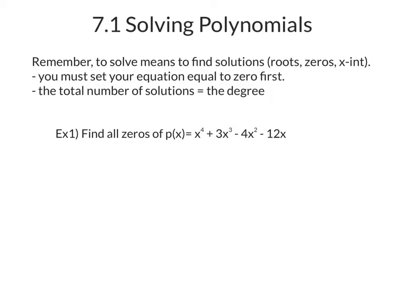So anytime you see the question just says solve and it gives you an equation, that's what you're looking for. You must set your equation equal to zero first, and you want to make sure you remember the zero product property as well. And this is the big one: the total number of solutions equals the degree. And remember, the degree is the highest exponent.